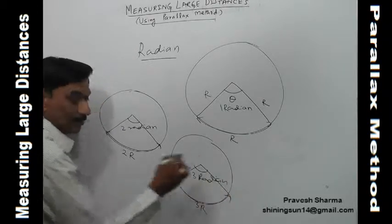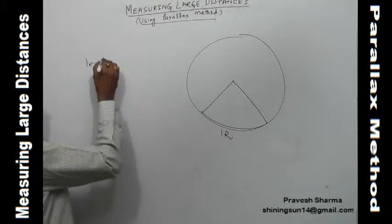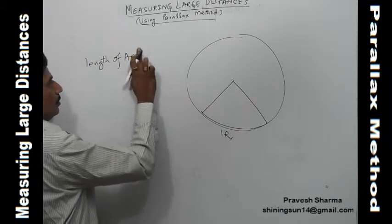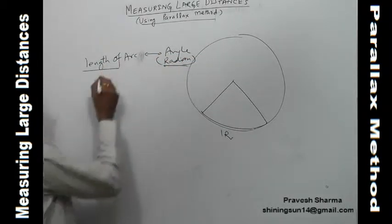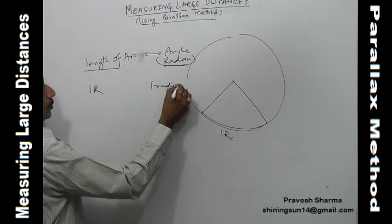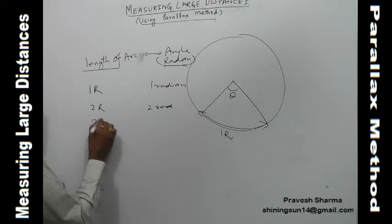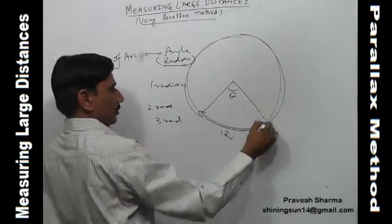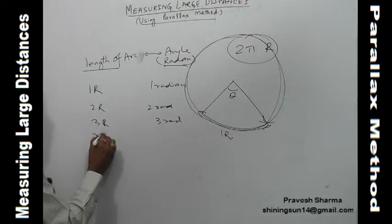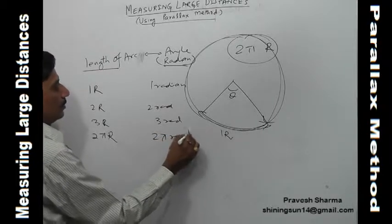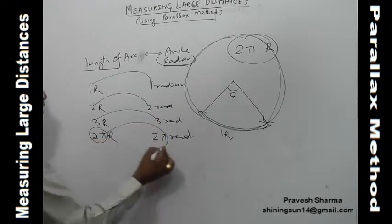For ease of understanding: if the length of arc is 1r, the angle is one radian; if it is 2r, the angle is two radians; if it is 3r, the angle is three radians. The circumference of a circle is 2πr, so if the length is 2πr, the angle is 2π radians. So one complete circle equals 2π radians.